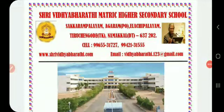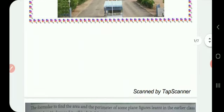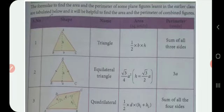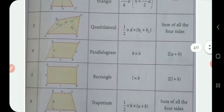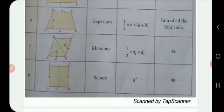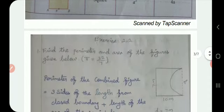Hi students, welcome to our math class, eighth standard mathematics. Do you remember what we discussed in the last video? We discussed about circle, quadrant, semicircle. Now recall the formulas: triangle, equilateral triangle, quadrilateral, parallelogram, rectangle, trapezium, rhombus, square — all these formulas. Also area of the circle, circumference of the circle, semicircle, quadrant. All the formulas, get them memorized.